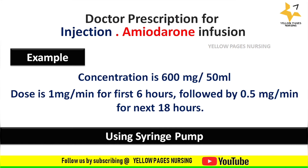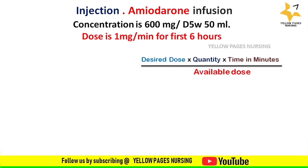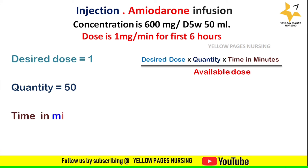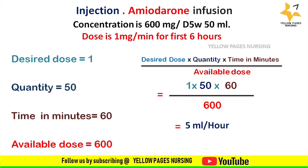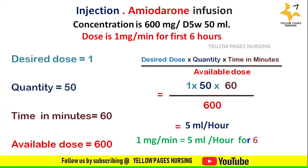Second example: injection amiodarone infusion concentration is 600 mg in 50 ml, dose is 1 mg per minute for the first 6 hours followed by 0.5 mg per minute for the next 18 hours. For the dose of 1 mg per minute: desired dose = 1, quantity = 50, time in minutes = 60, available dose = 600. Applying the formula gives 5 ml per hour for the first 6 hours.